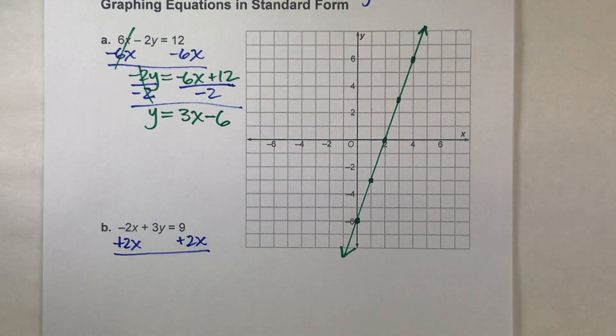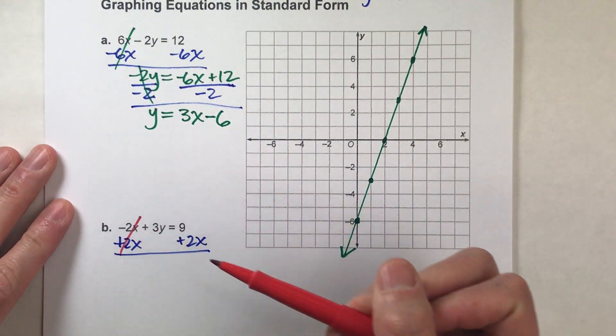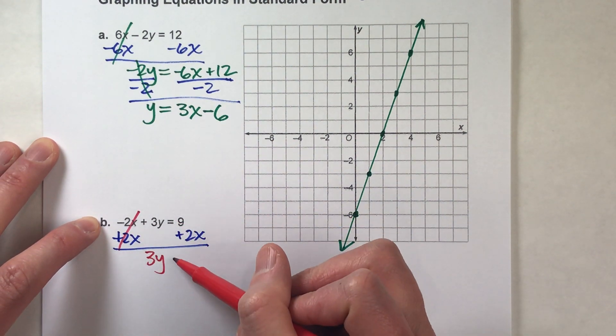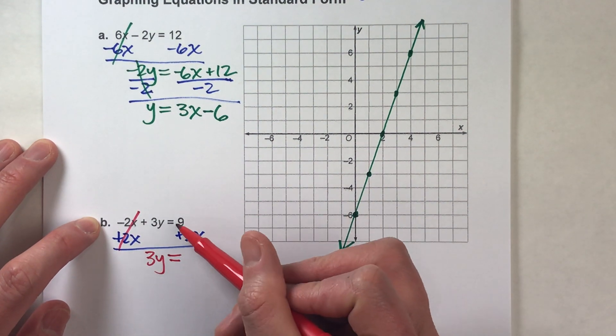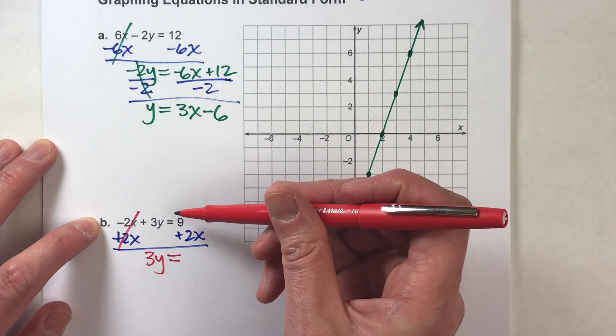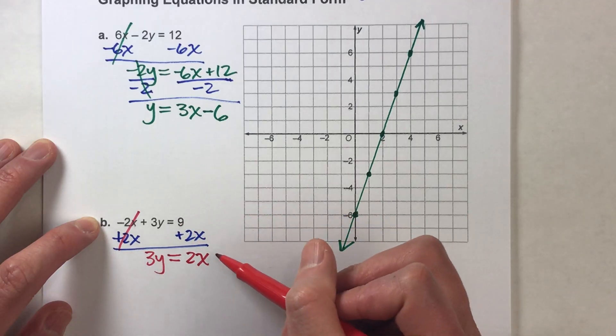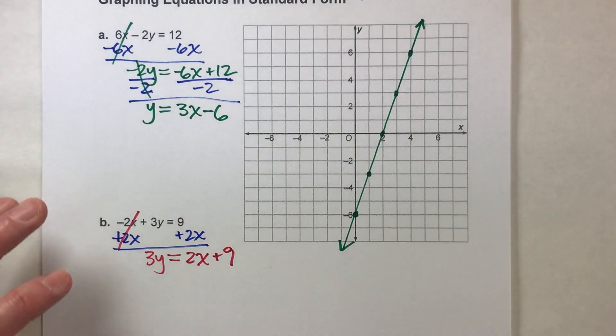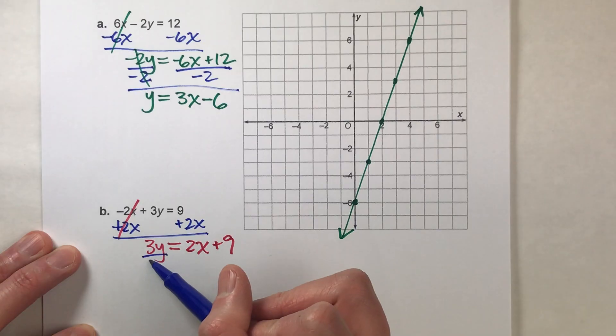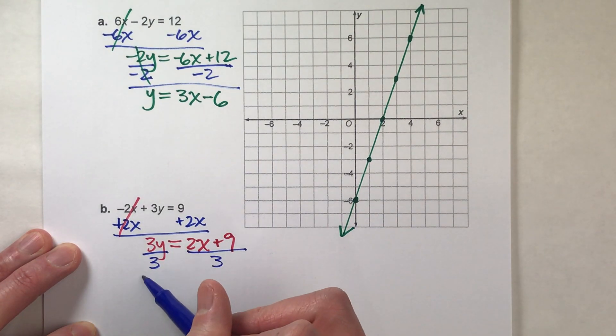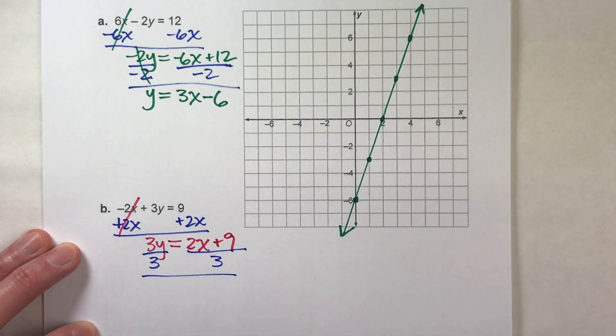When I do that, this time the 2x's undo each other, but the 3y drops down, the equals drops down, and I can't add x's to regular numbers, so I'll keep them separate. So I've got the 2x here and the positive 9 right there. Alright, now to get y, I'll divide both sides by 3, and don't forget, divide the entire other side by 3, not just part of it, the whole thing.